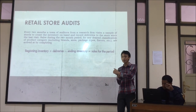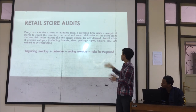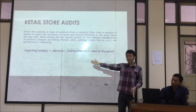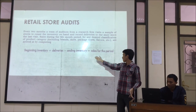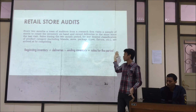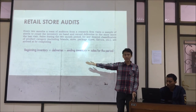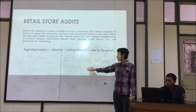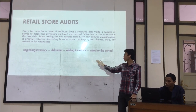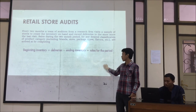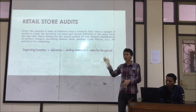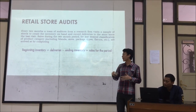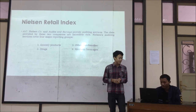What the auditors do is record the beginning inventory and also the deliveries from the company, and also the sales for the period. To compute the sales for the period, the formula is: beginning inventory plus deliveries minus ending inventory equals sales for the period. This information recorded by the auditors will be sent back to the company that needed it.